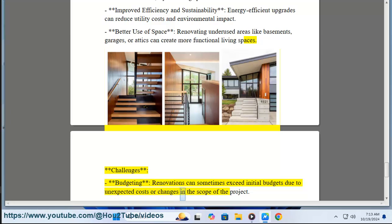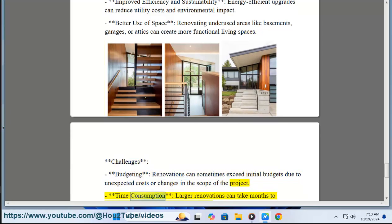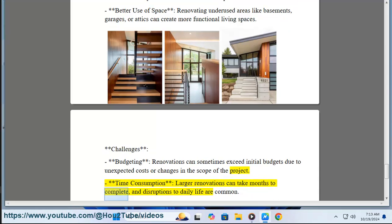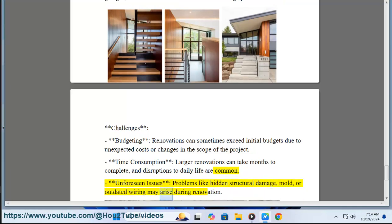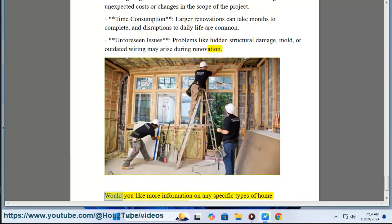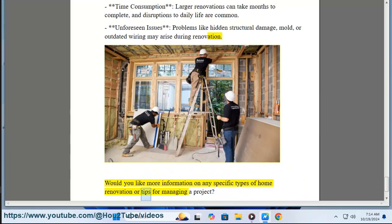Challenges. Budgeting: renovations can sometimes exceed initial budgets due to unexpected costs or changes in the scope of the project. Time consumption: larger renovations can take months to complete, and disruptions to daily life are common. Unforeseen issues: problems like hidden structural damage, mold, or outdated wiring may arise during renovation. Would you like more information on any specific types of home renovation or tips for managing a project?